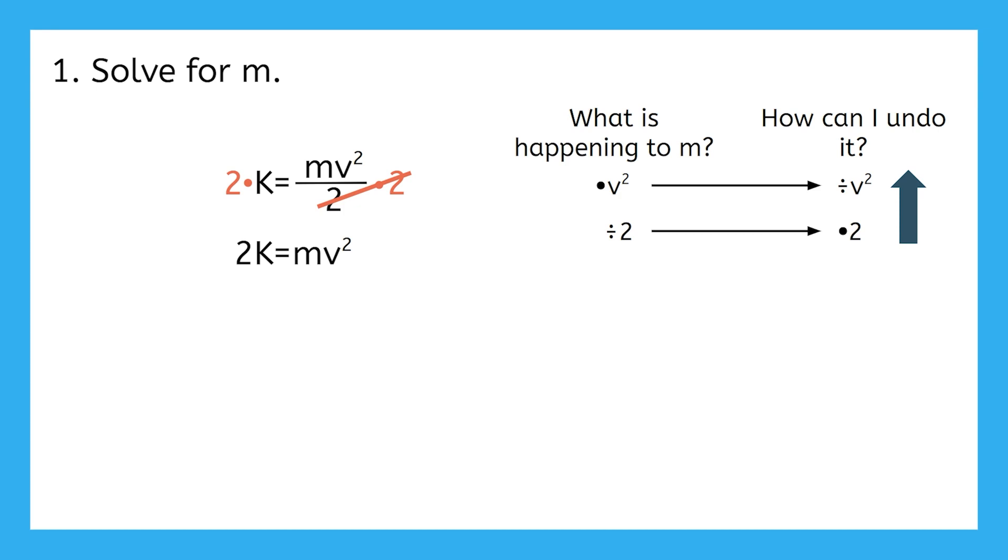Does it matter that the V is being squared? Nope. All that we care about is that it's being multiplied times M, and we don't want it to be multiplied times M anymore.